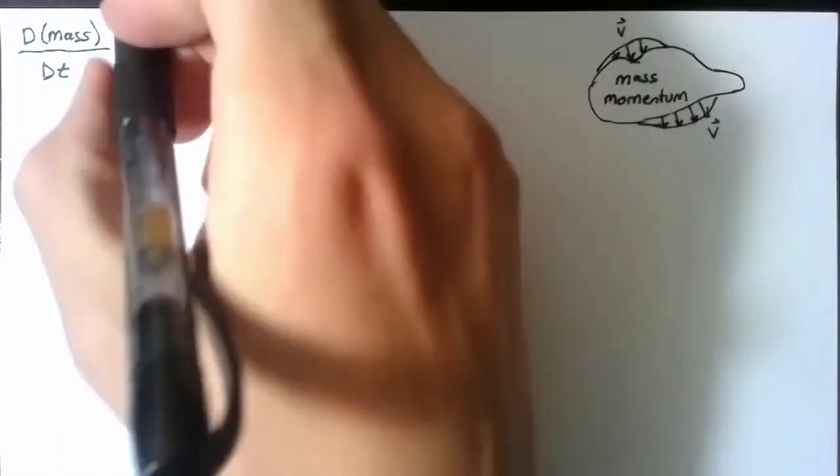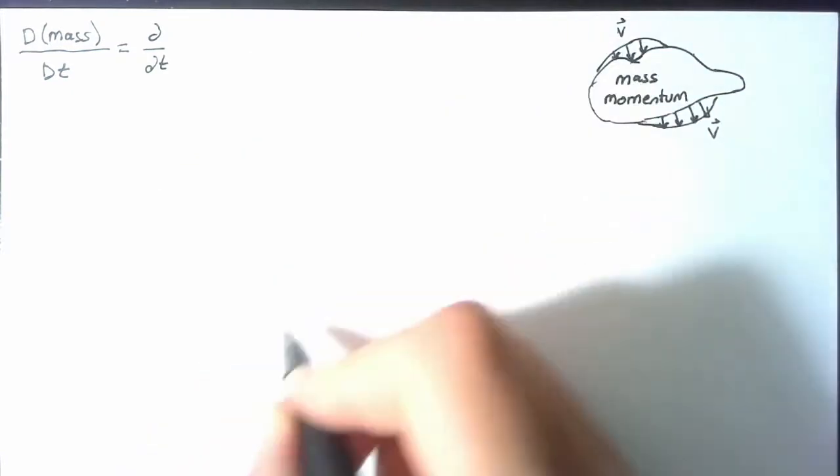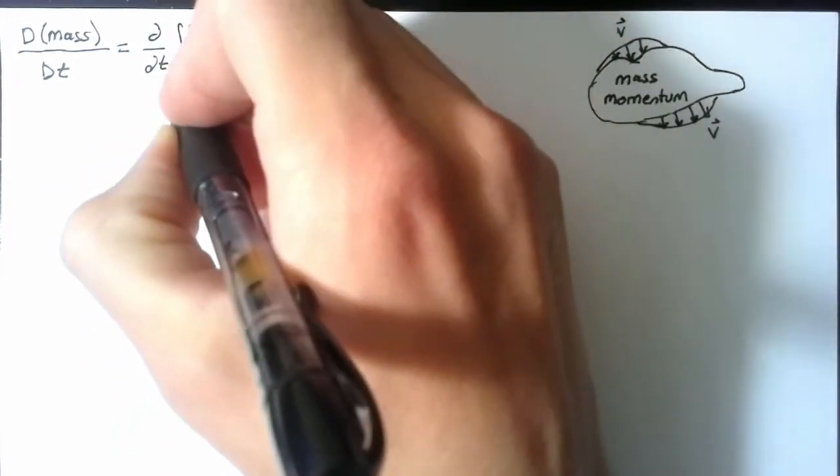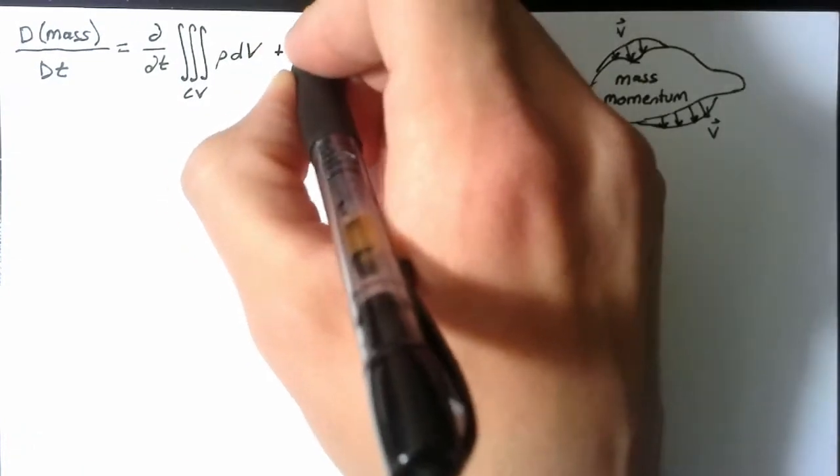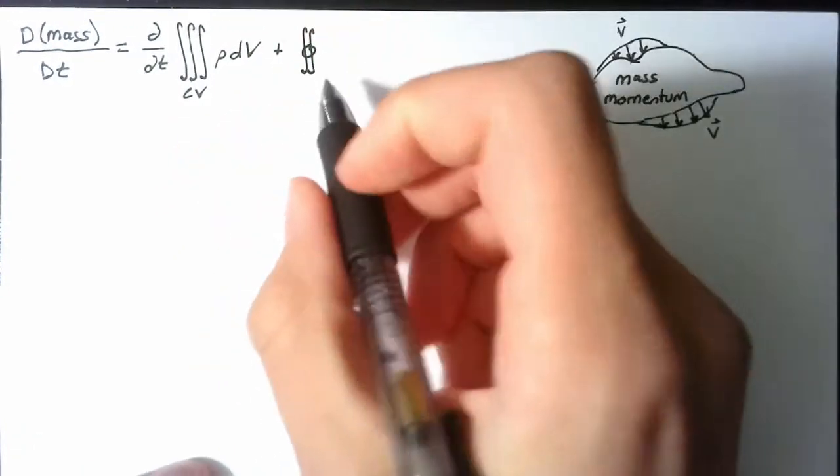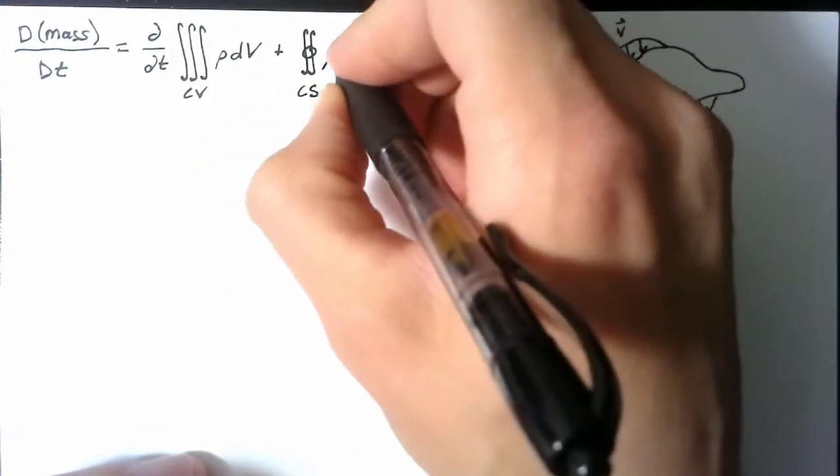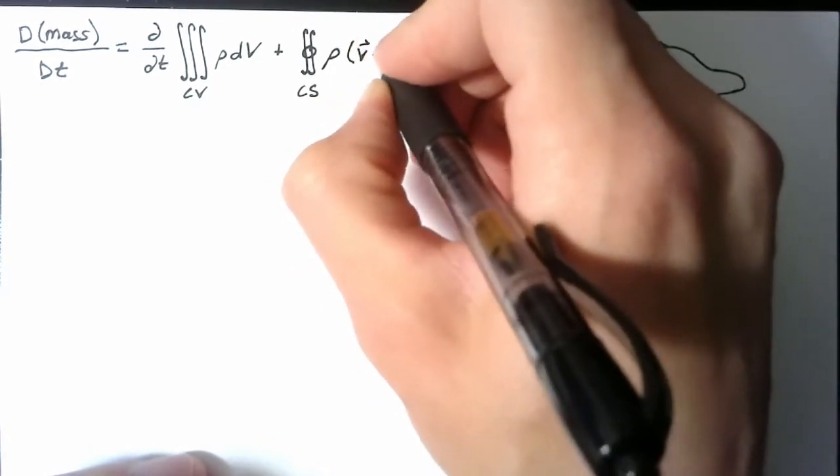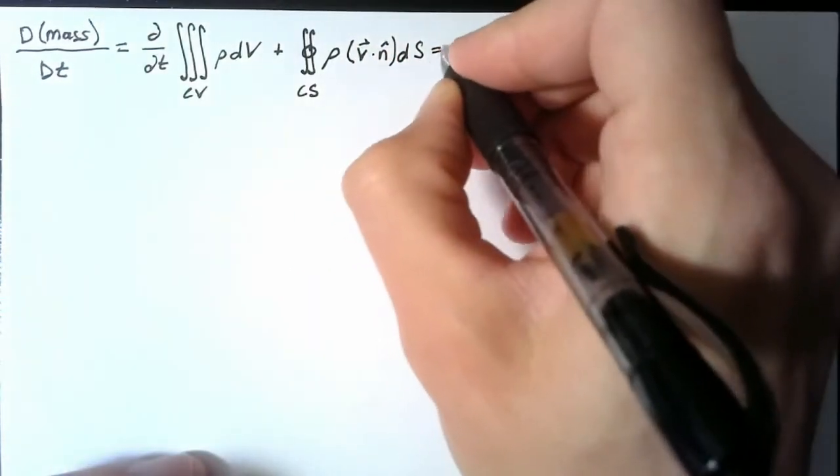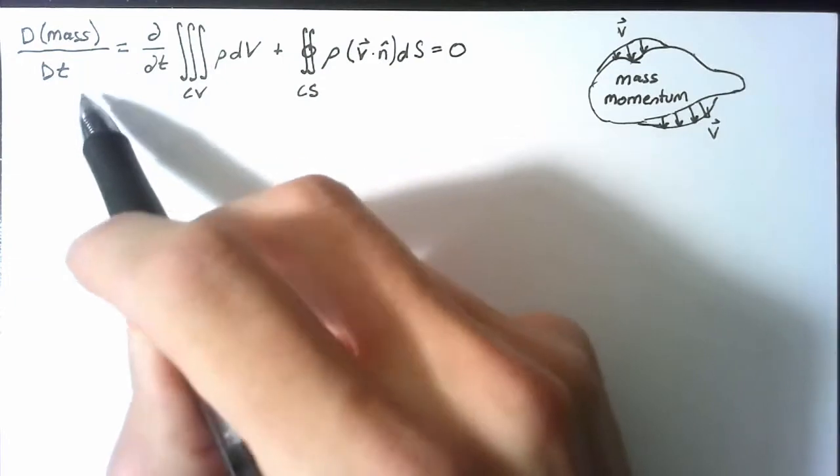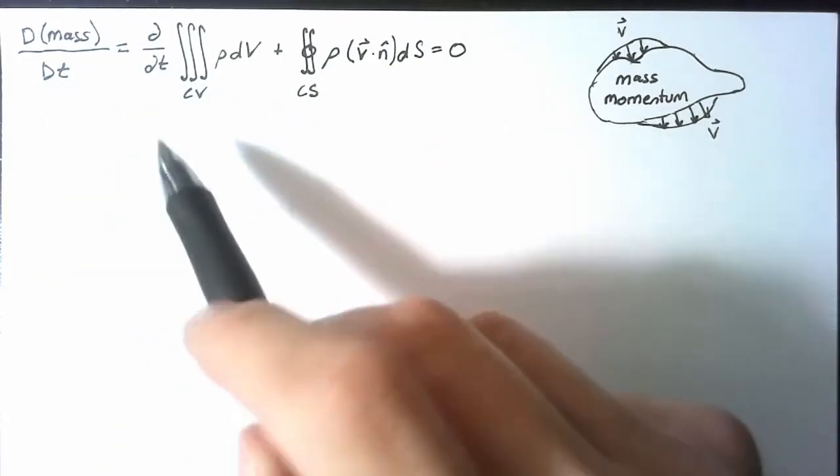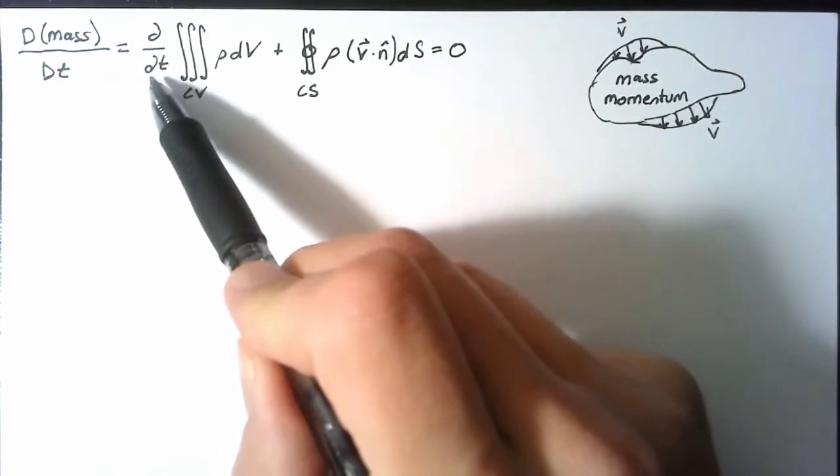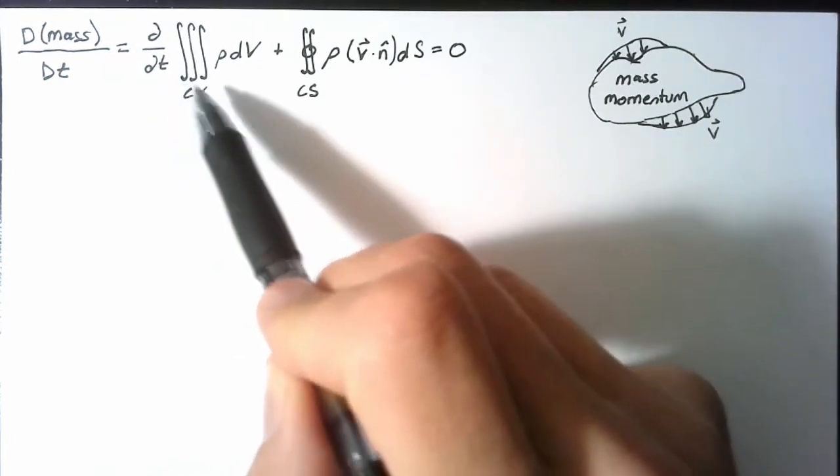We can split this up into two pieces. The first piece is the local time derivative of the mass inside this volume. The second part is the flow of mass through the control surface, the surface surrounding the control volume. And this was equal to zero. So we said that this material derivative followed the fluid itself, while this local derivative is fixed on the control volume.